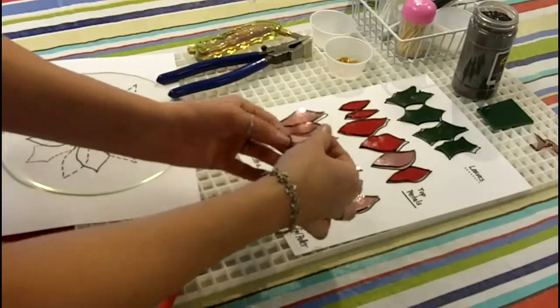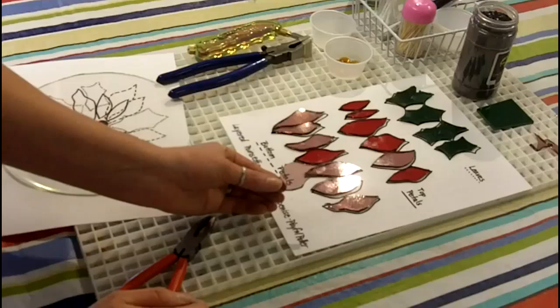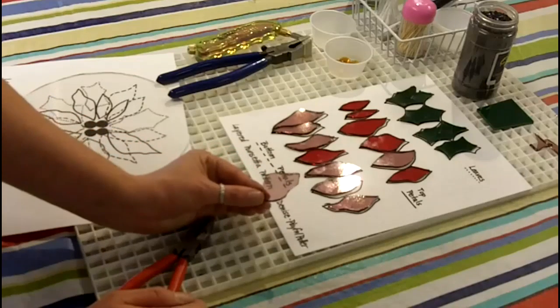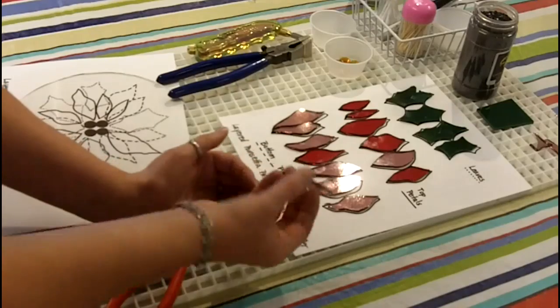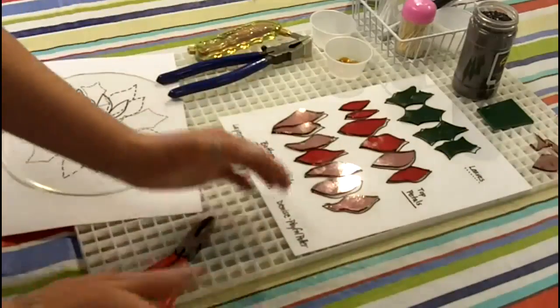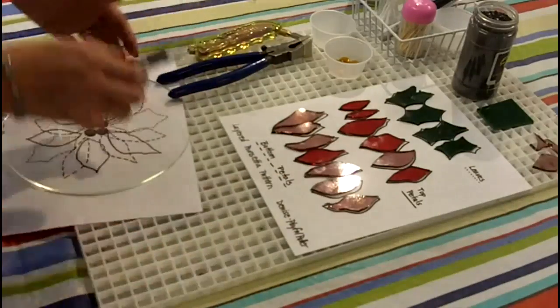So there's another petal shape. Again, the shape of the petals doesn't matter quite as much. You do want your bottom layer of petals to be a little bit more narrow than your top petals. They are going to overlap. I like to do this project with transparent glass because you do get the depth when you add those layers.